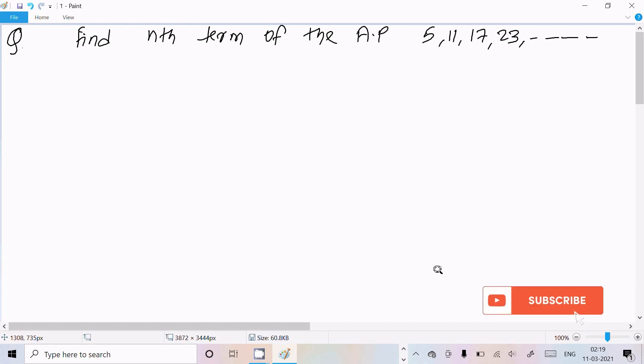In this video lecture, I am going to find the nth term of the AP: 5, 11, 17, 23, and so on. Let's see the answer. Here's the given AP (arithmetic progression): 5, 11, 17, 23.